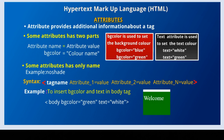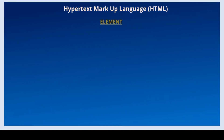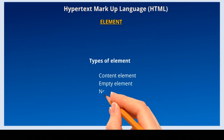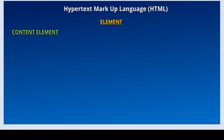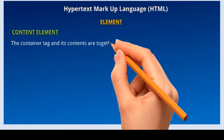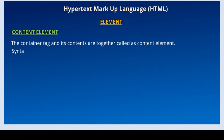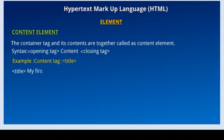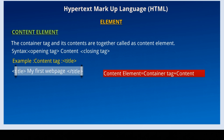Thus attributes give additional information to the tags. The next component of HTML is element. The tag and its contents together are called as an element. Types of elements: content element, empty element, and nested element. Content element: the container tag and its contents together are called as a content element. The syntax is: write the opening tag, then write some content, and finally write the closing tag. For example, using the content tag title: write the opening title tag, then write some content, and finally write the closing title tag. The entire statement together is called as an element. The content here is 'my first web page'.